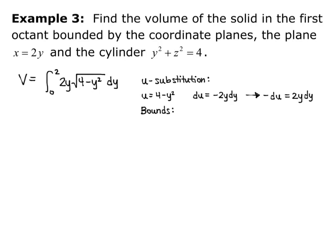Now I'm going to change my bounds so that I can just do my u integration and not have to go back and substitute an expression of y in there. So when y equals 0, my lower bound, u equals 4 minus 0 squared, which gives me a 4. When y equals 2, my upper bound, u equals 4 minus 2 squared, which gives me 0. So my bounds are now going to be 4 to 0.